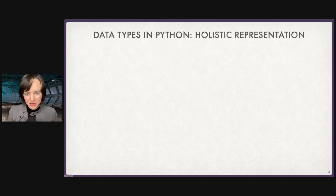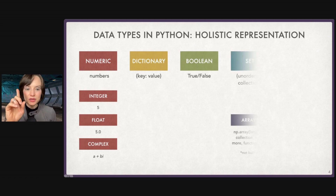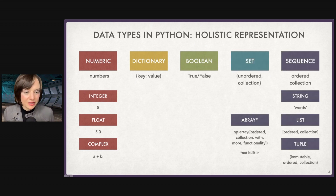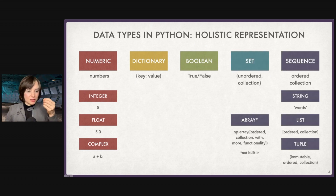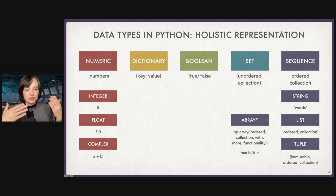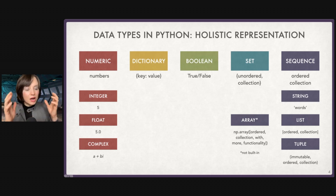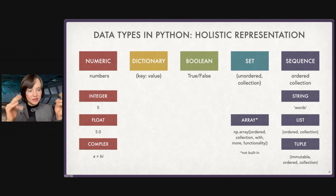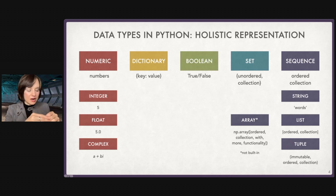Data types in Python — there are a few, and we're not going to use them all in this course. We've got numeric data types, dictionaries where we have a key associated with a value, Boolean data types where we can take on values of true or false. We have sets, which are collections of elements that are unordered — like {6, 5, 2} and {2, 5, 6}: we don't care what order they're in. And then we have sequences, which are items that are in an order and that order matters.